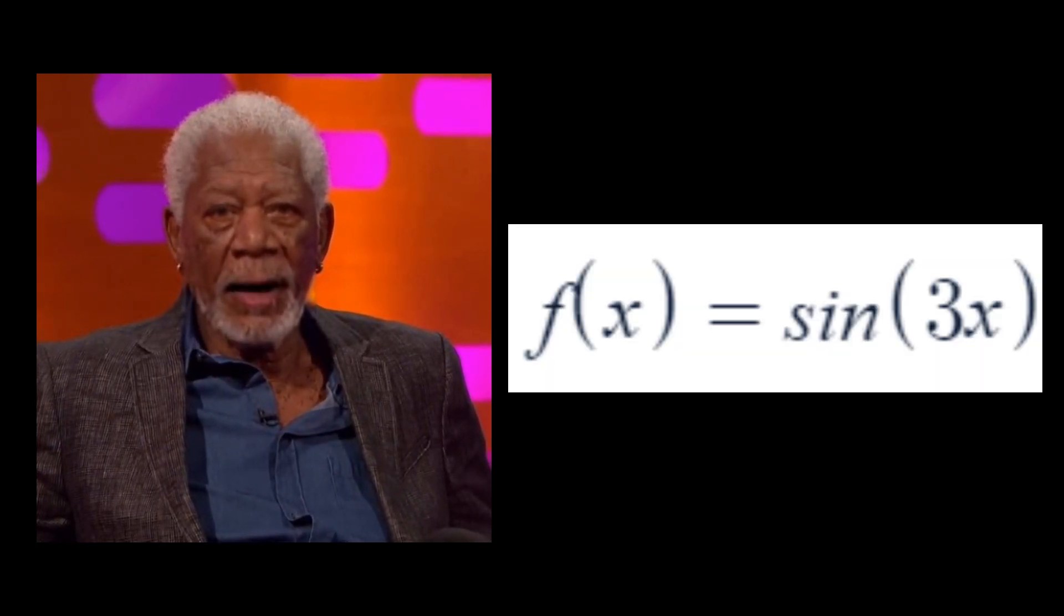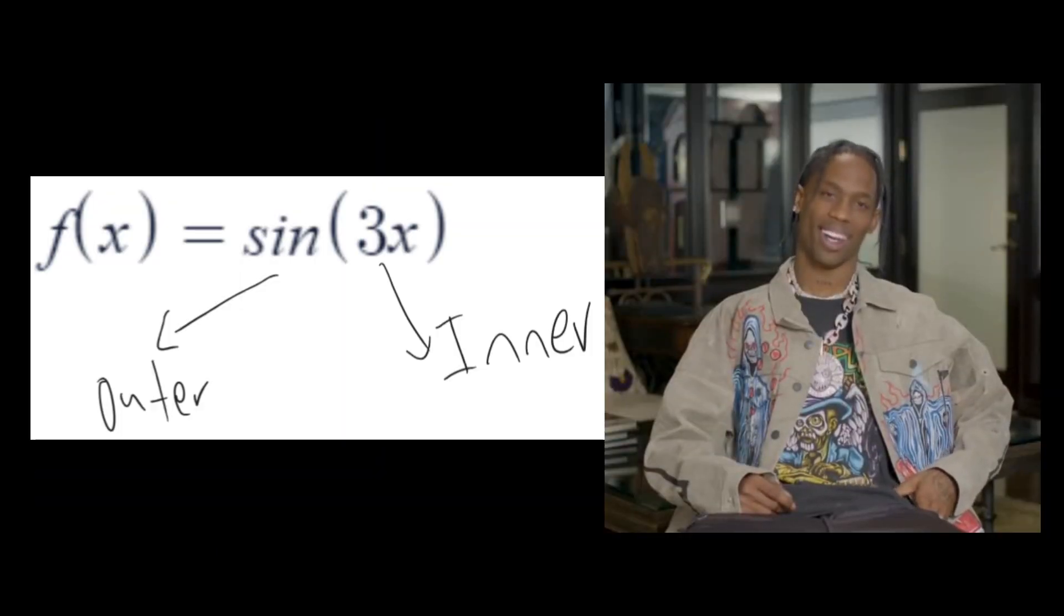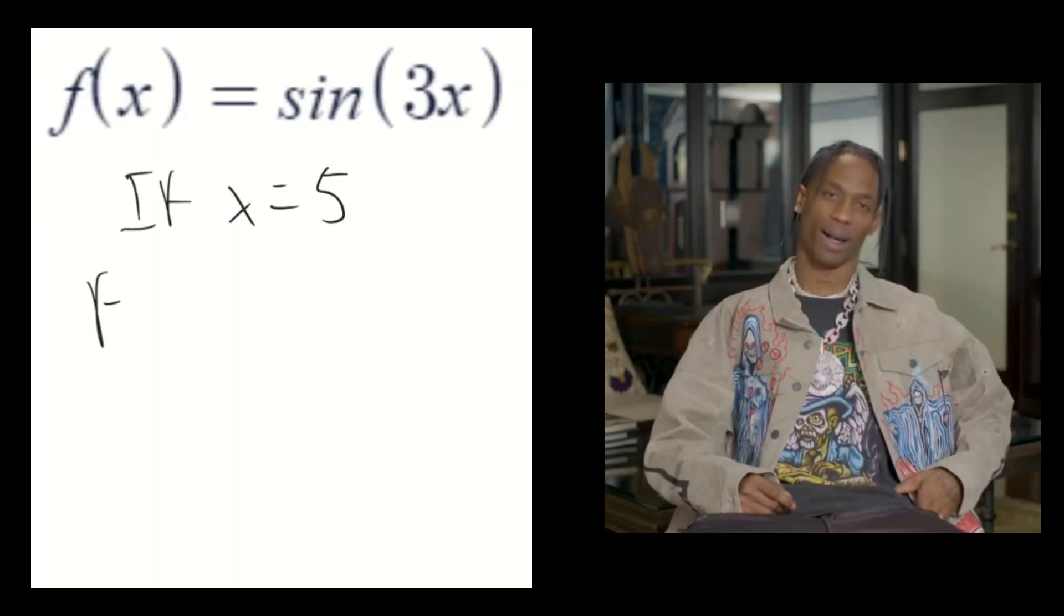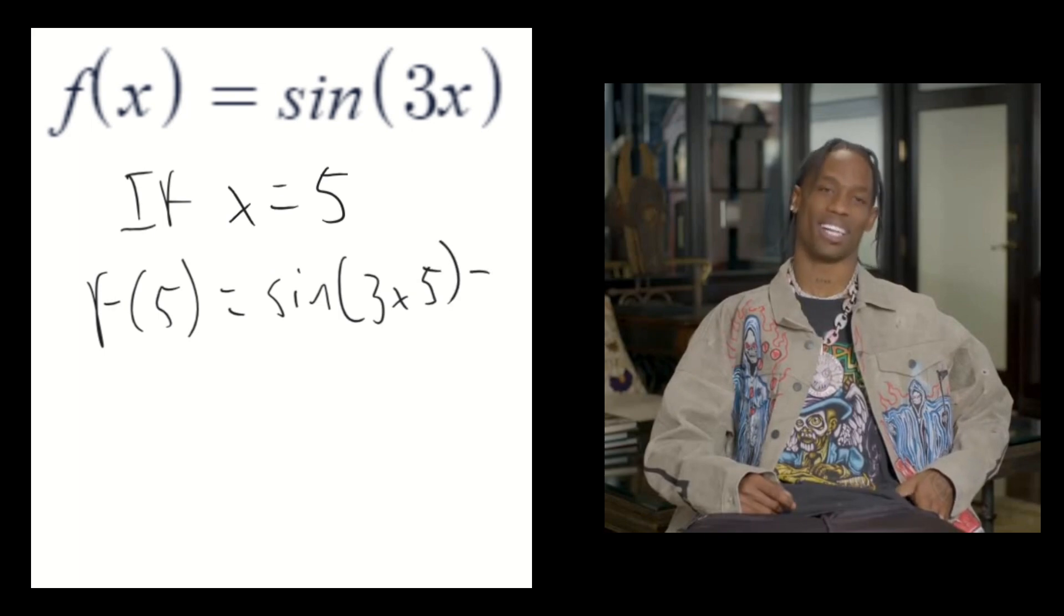An example of this is the function sine of 3x. Oh, and this is because 3x is the inner function and sine of x is the outer function, because you first multiply x by 3, then take the sine of that result.